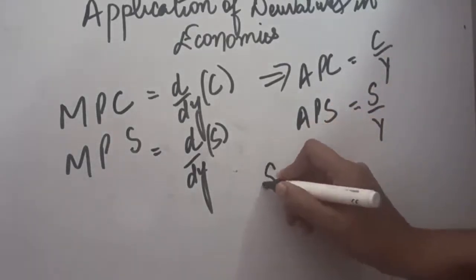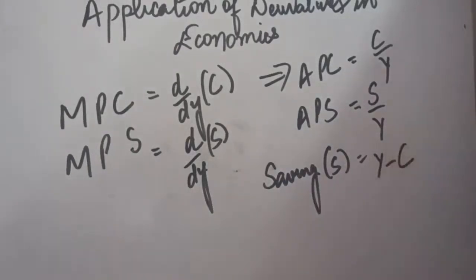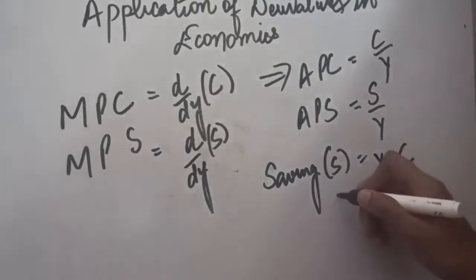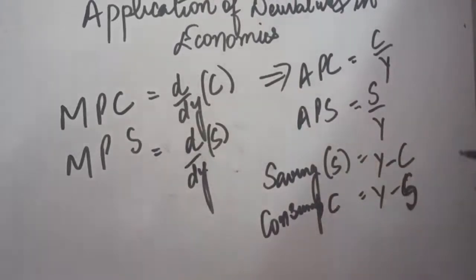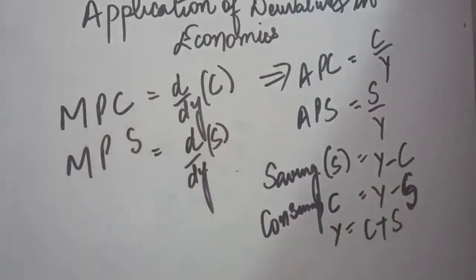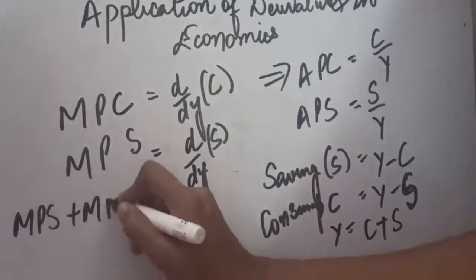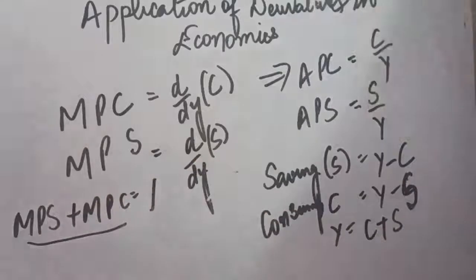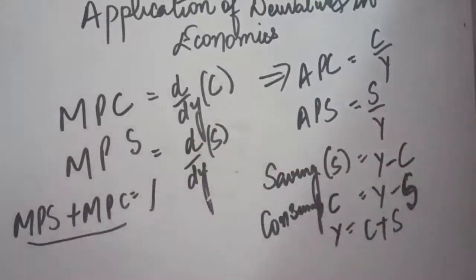Savings S = income minus consumption (Y − C), and consumption C = income minus savings (Y − S). Total income is the combination of consumption and savings. Importantly, MPS + MPC always equals 1. So MPS = 1 − MPC and MPC = 1 − MPS. With the help of these formulas you can easily calculate the application of derivatives in economics.